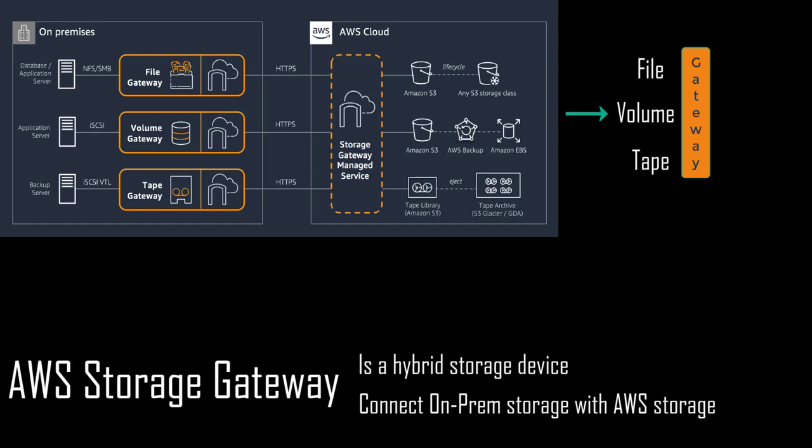With volume gateway, there are two types. First, stored volumes give you the ability to keep customer data on-premise, and that data can periodically be backed up to AWS based on snapshots — great for hybrid environments where customers want local data with AWS backups. Second, cached volumes store data in AWS while the most frequently accessed data is cached in the customer's data center for fastest access, giving customers fast local access with all the benefits of cloud storage.